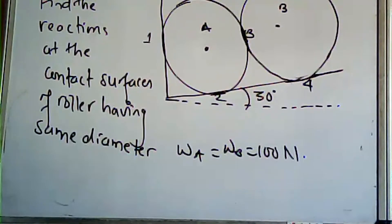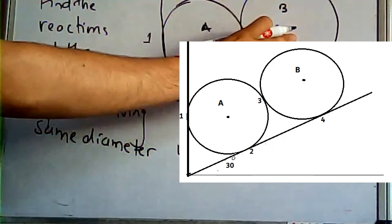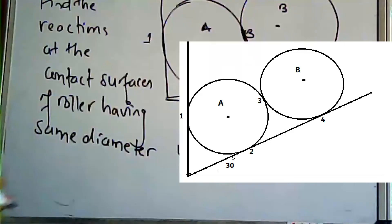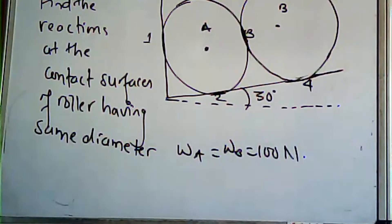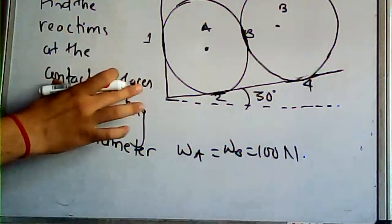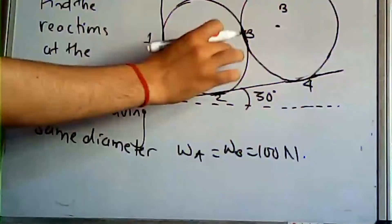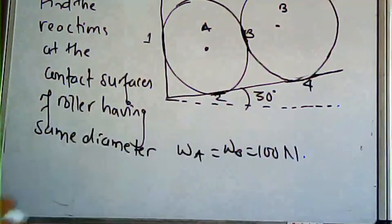This is a roller problem involving the equilibrium equation. We have rollers of the same diameter on the same plane. The weight of each roller is the same — WA and WB are both 100 Newton.